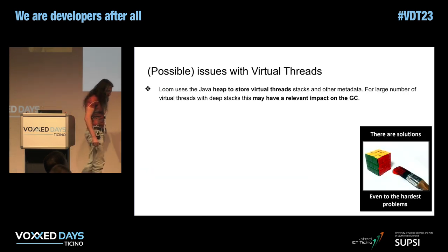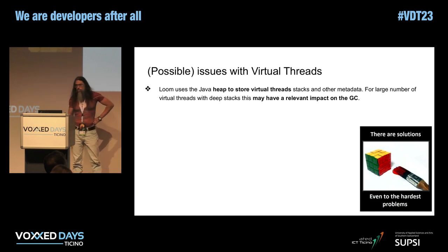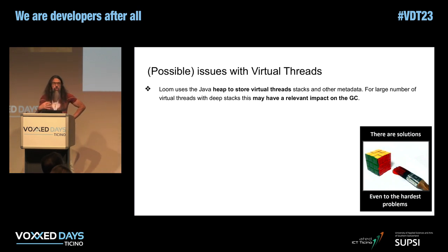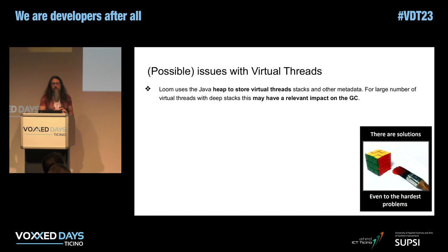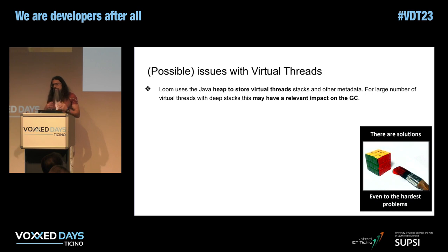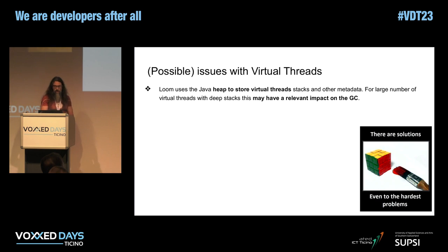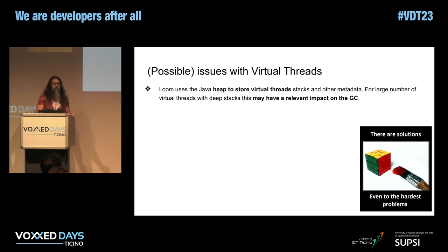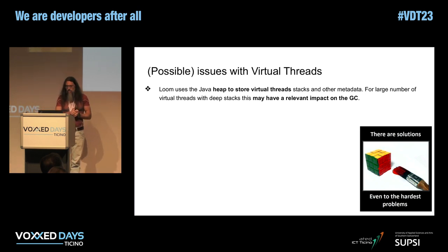I said that virtual threads are this new tool, and also that they are not going to replace native threads — they are just a new tool. Why? Because they could actually have a few issues. Like any other tool, there are trade-offs. They are generally great — I've been playing with them for a while and I'm happy. At the beginning they didn't work at all, there was quite a long transitionary phase, but now they work pretty well. Still, there are some issues I wanted to mention.